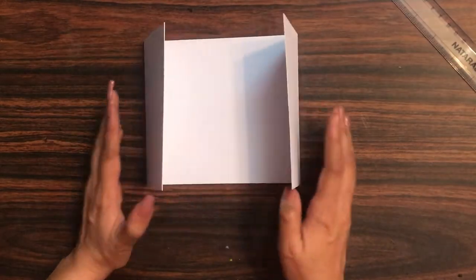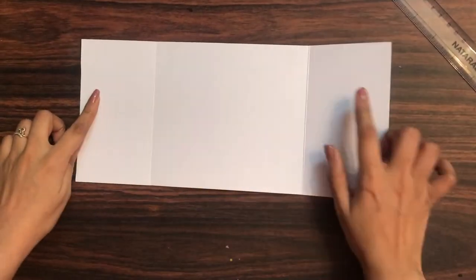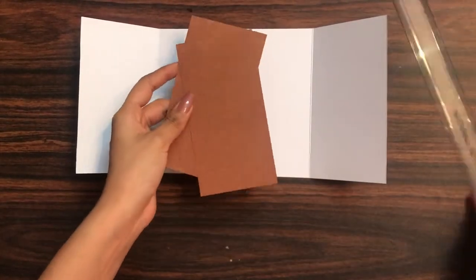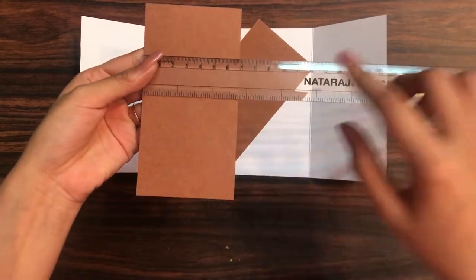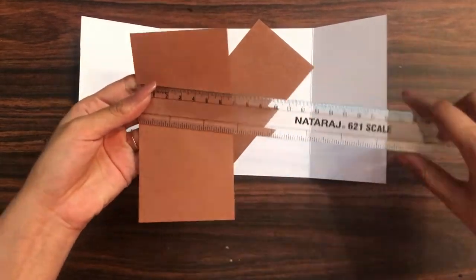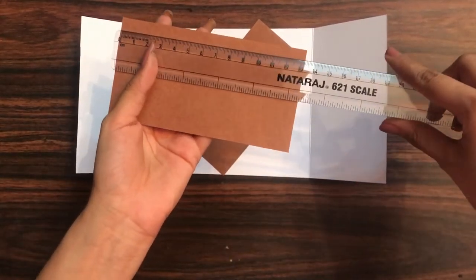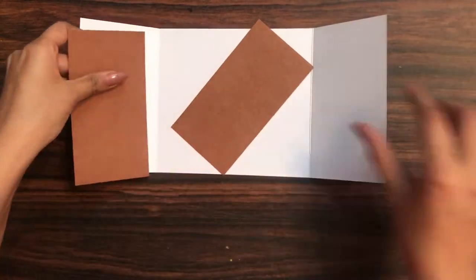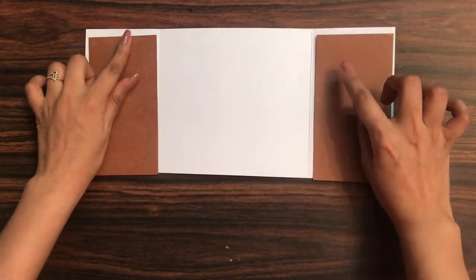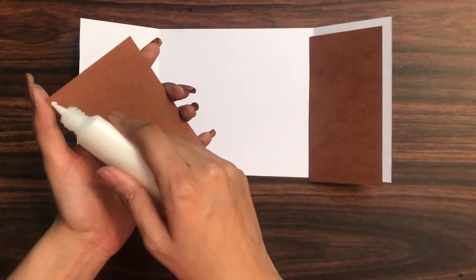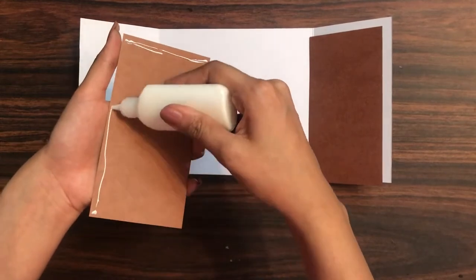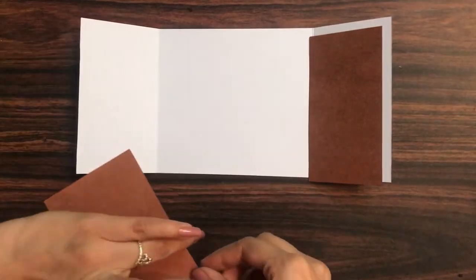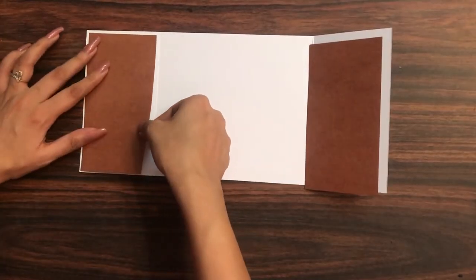Now to embellish it, here I have a brown craft cardstock which measures 2.75 inches by 5.25 inches, and I have taken two pieces of the same size to stick on the folding arms of my gatefold card like this. Using my liquid adhesive, I am simply adding it on the base. It will add a very nice layer. If you don't have this craft color cardstock, you can use any other color as well.